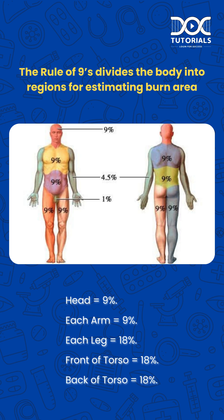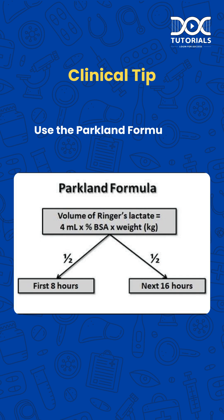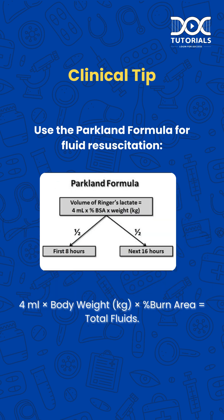The back of the torso is equal to 18%. Clinical tip: use the Parkland formula for fluid resuscitation — 4 ml times body weight times percent burn area equals total fluids.